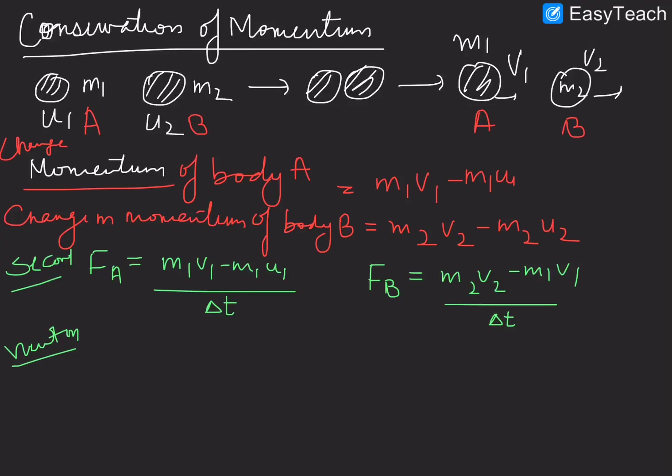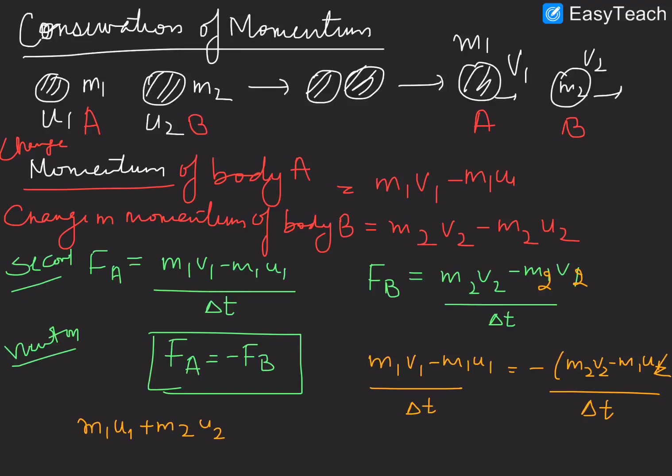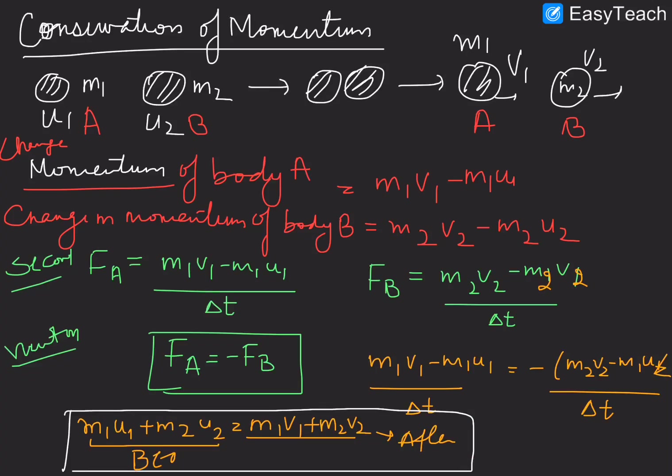Now we can use Newton's Third Law, and according to third law, forces exerted on both the bodies will be equal and opposite, and for every action there is equal and opposite reaction. So we can equate these two, and we can write M1V1 minus M1U1 upon delta T is equal to minus M2V2 minus M2U2 upon delta T. And also on solving, what we will get as M1U1 plus M2U2 is equal to M1V1 plus M2V2. Now what is this? Momentum before collision, and similarly this is momentum after collision, which says that the momentum always remains conserved. As much momentum was there before, that much momentum will be there after. Hence we have proved that the momentum is always conserved.